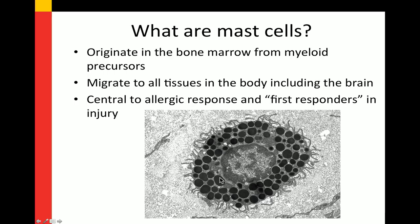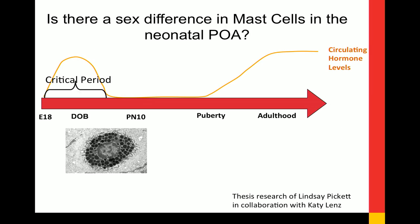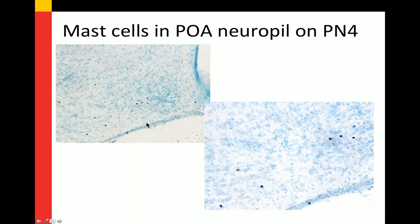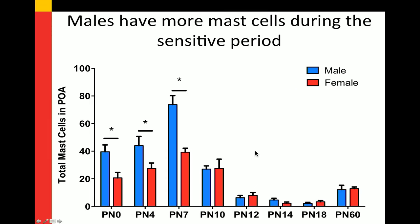Lindsay Pickett asked: is there a sex difference in mast cells in the neonatal preoptic area? Staining with toluidine blue (or IBA1 immunohistochemistry for reviewers), she did an exhaustive survey from the day of birth up to adulthood. Throughout the period of sex differentiation, males had significantly more mast cells than females. After the critical period, mast cell numbers dropped, popped back up in adulthood, but with no sex difference. So because mast cells can both irritate you and kill you, there are pharmacological tools to prevent degranulation (cromolyn and ketotifen) or induce it (compound 48/80).